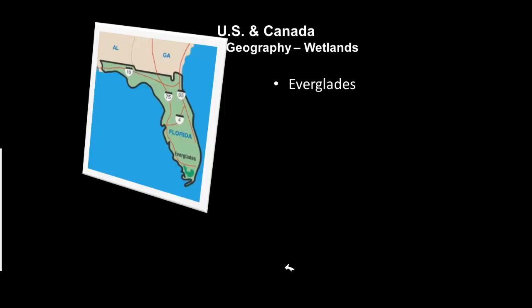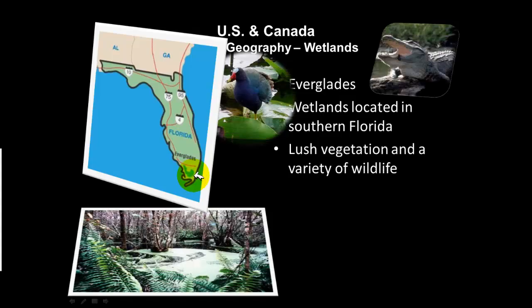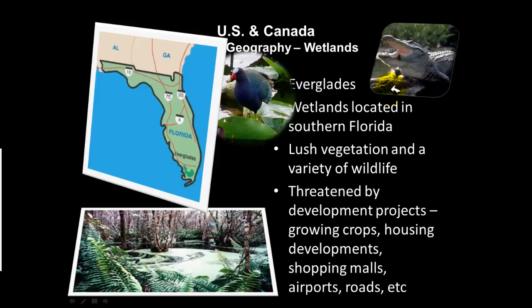The Everglades are a swampy wetlands area in South Florida. Like Louisiana, this region features lush vegetation — meaning very rich, deep, colorful plant life — and a wide variety of wildlife, illustrated by the alligator shown here. Just as Louisiana's swampland is threatened by erosion and development, the Everglades in Florida are threatened by housing developments, shopping malls, airports, roads, and agricultural projects.